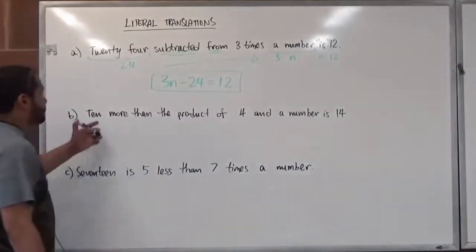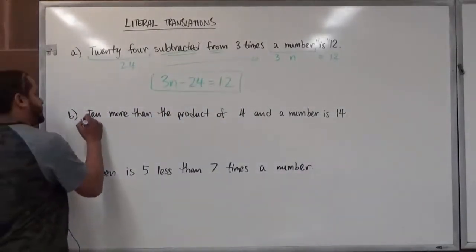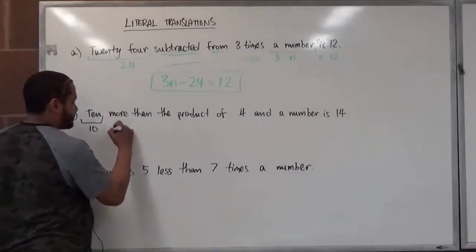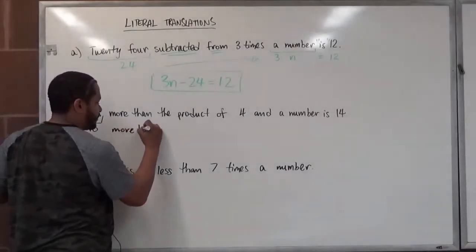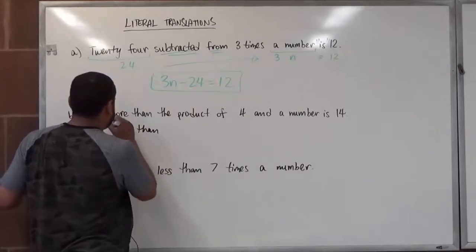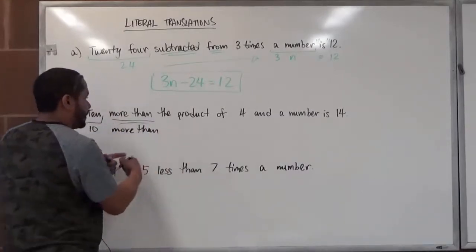So in the second problem, what we have here is 10, which is a number, then it says 'more than,' which is a post-operation. So this is going to help us switch the two values around.